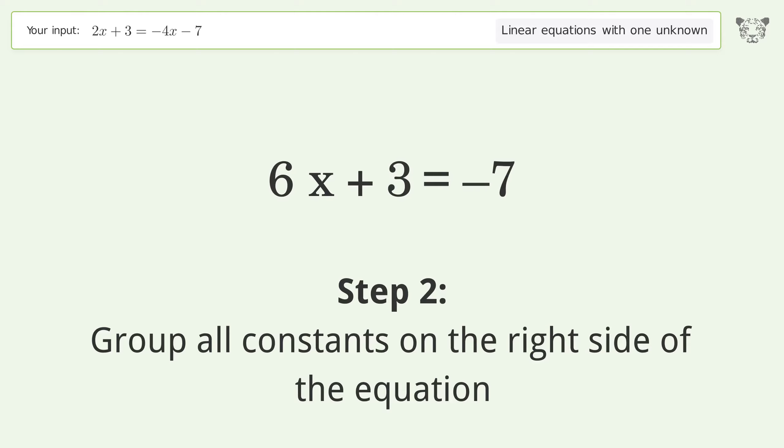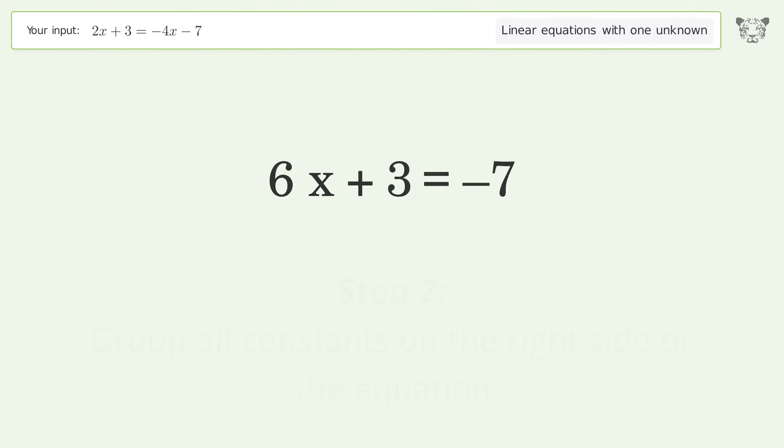Group all constants on the right side of the equation. Subtract 3 from both sides. Simplify the arithmetic.